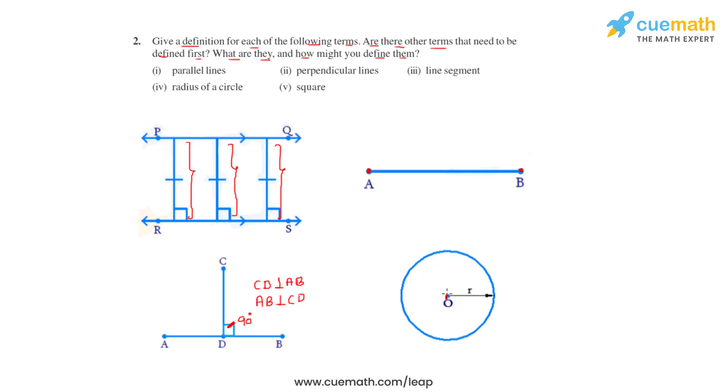So as we can see, this is the center, center O, and any point on the circumference of the circle. Let's say this point. So the distance between these two points is called as the radius.